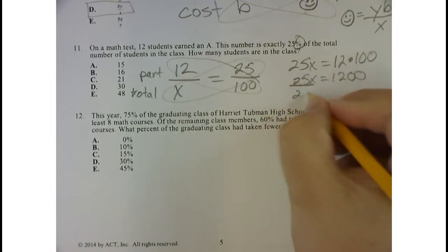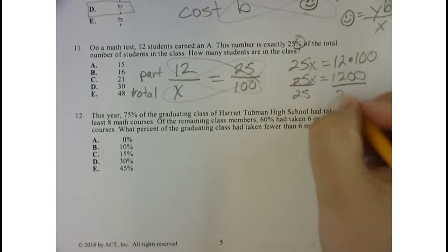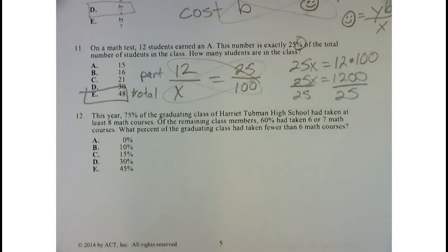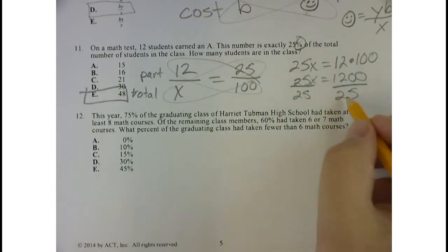Divide both sides by 25, and you'll get that x is equal to 48, because 1,200 divided by 25 is 48.